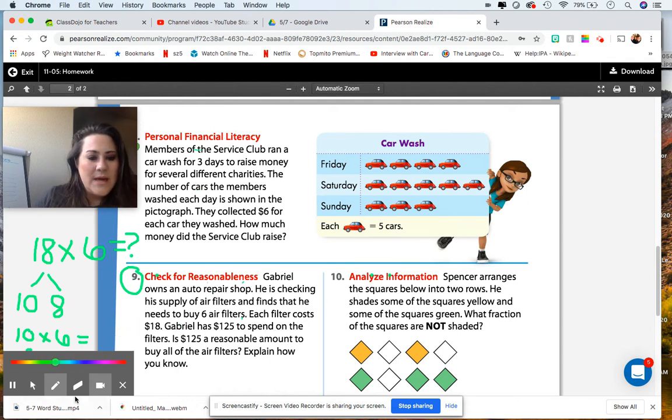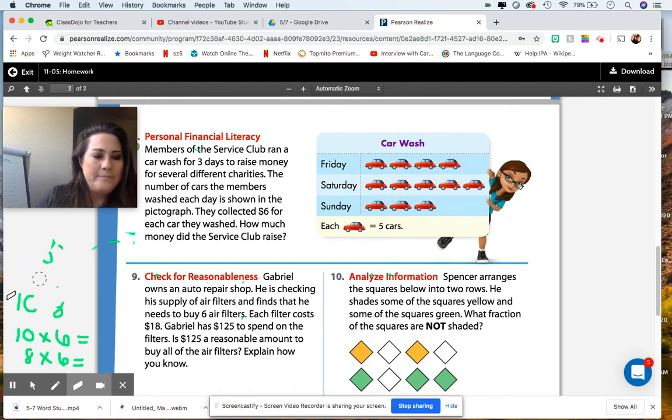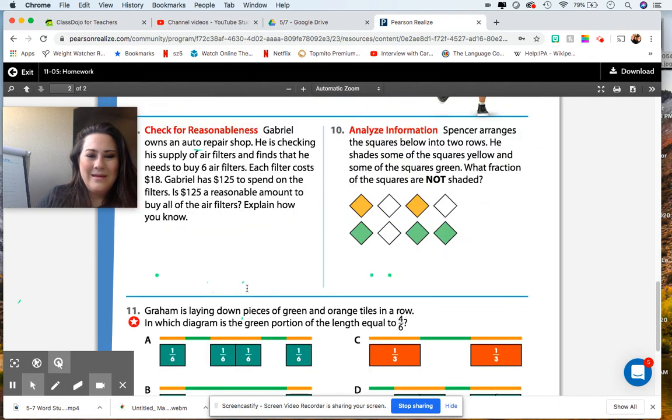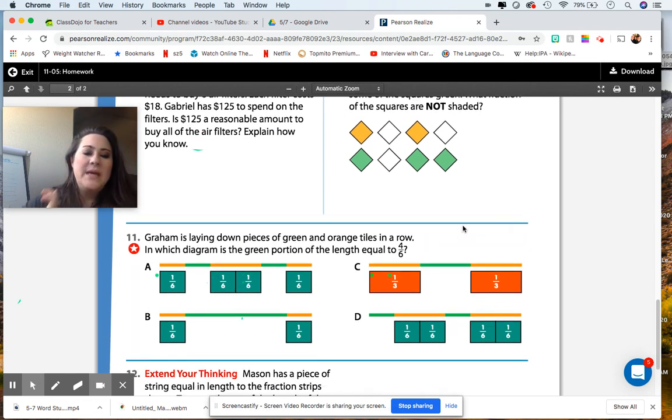I guess let's go on to number 11. All right. Graham is laying down pieces of green and orange tiles in a row. In which diagram is the green portion of the length equal to 4 sixths? So if we look at this, the first thing is we're going to look at the ones that have 6 in the denominator as well. So we could automatically cross out C.